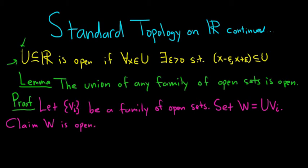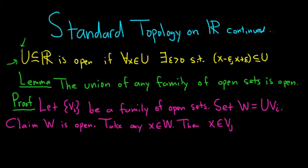We'll take some x in W, and then we have to show that there is an epsilon neighborhood about x that's completely contained in W — that will complete the proof. Take any x in W. That means x is in the union of the V's, so x must be in at least one of these. So x is in V sub j for some j.